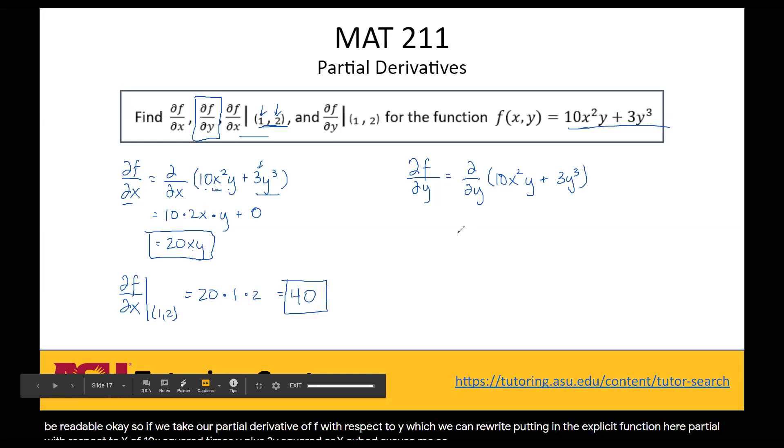So again, just like we did with our partial with respect to x, we're going to treat any variable that's not y as a constant. So in this case, our x term here is just going to be treated as a constant. So we can just roll it right in with this 10. So the whole constant here is treated as 10x squared. So if we take the derivative of this first term, that'll give us our 10x squared as our constant times the derivative of y, which is just 1.